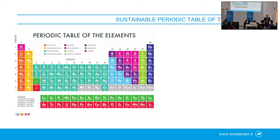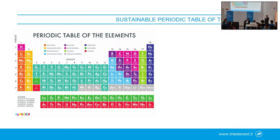Everybody knows the periodic table of the elements in its standard form. All the elements are classified in groups, periods, and so on. As scientists we are used to doing something like this — that's the reason why I have a big periodic table in our lab — where you choose one element and another, try to combine them, use different structures and build up new functionalities. That's fantastic. But this form of the periodic table pays no attention to the supply chain.